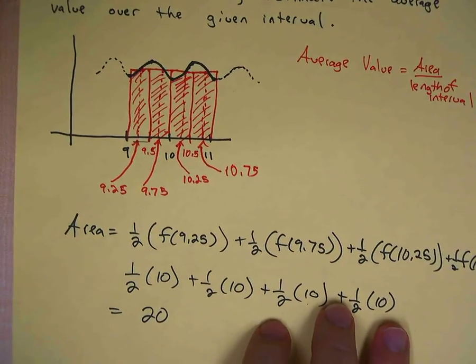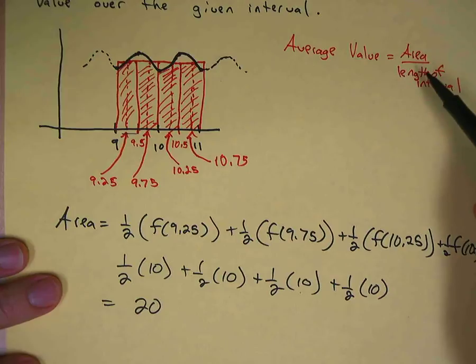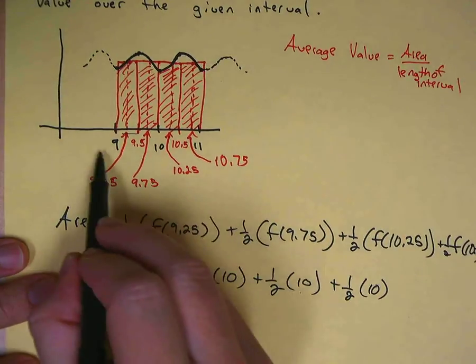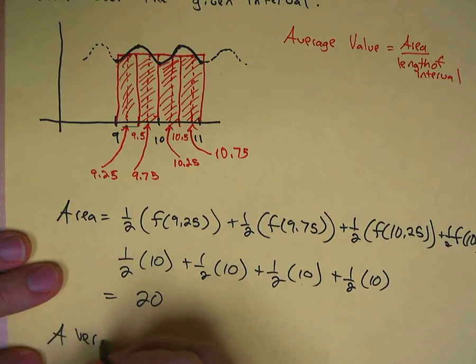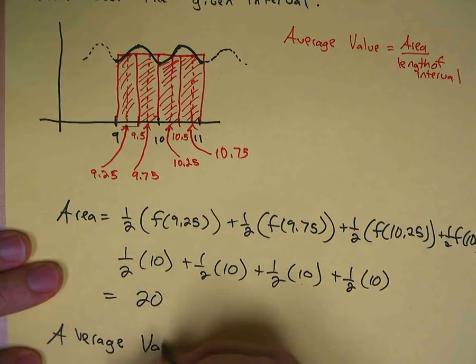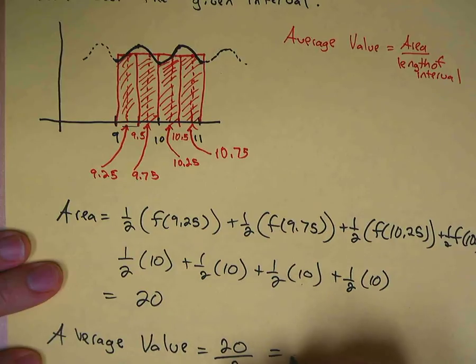Now the average value of the rectangles, remember, average value is area over the length of the interval. The length of this entire interval is 2, so the average value is 20 over 2, which is 10.